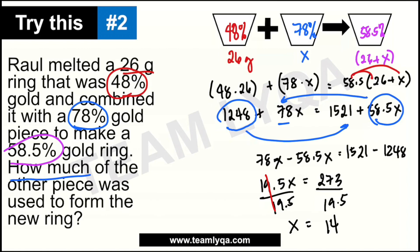So yung divide natin both sides by 19.5 — maka-cancel natin ito, may iiwan yung x sa kabilang side, equal siya sa 14. Here's the trick: if you don't want to deal with decimals, two times 19.5 is going to give us 39. So divide mo na lang sa 39, tas i-multiply mo siya sa 2. Or kung mas gusto mo, you can always go back to the traditional way: 273 divided by 19.5 via long division. The answer is 14 grams.